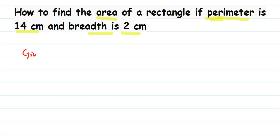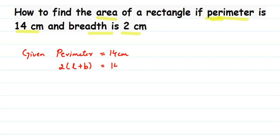Let's write down what is given. Perimeter is equal to 14 centimeters. We know that the perimeter formula is 2 into (L plus B), so 2 into (L plus B) is equal to 14. I'm not writing down the units while substituting values. They have also given breadth is equal to 2 centimeters, so in place of B we can substitute 2.